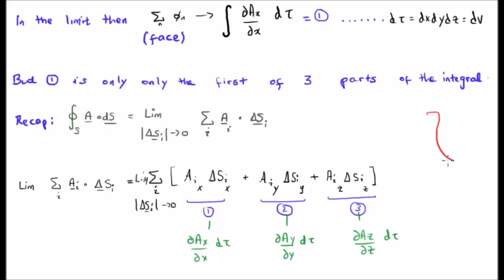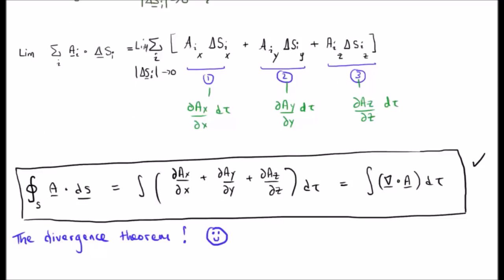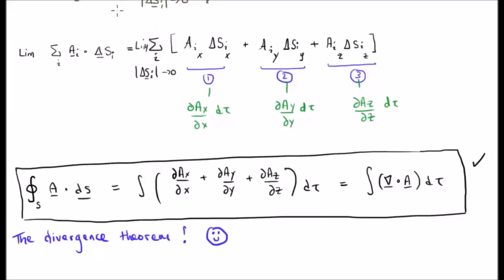To recap, this is the expression we started with. In the limit, the Riemann sum becomes an integral: the integral of ∇·A dτ. That is the divergence theorem. We've gone from a closed surface integral of A·dS and we've gone to the volume integral of the divergence of our vector field. If you need to review the divergence, look at my videos on vector calculus for electromagnetism.